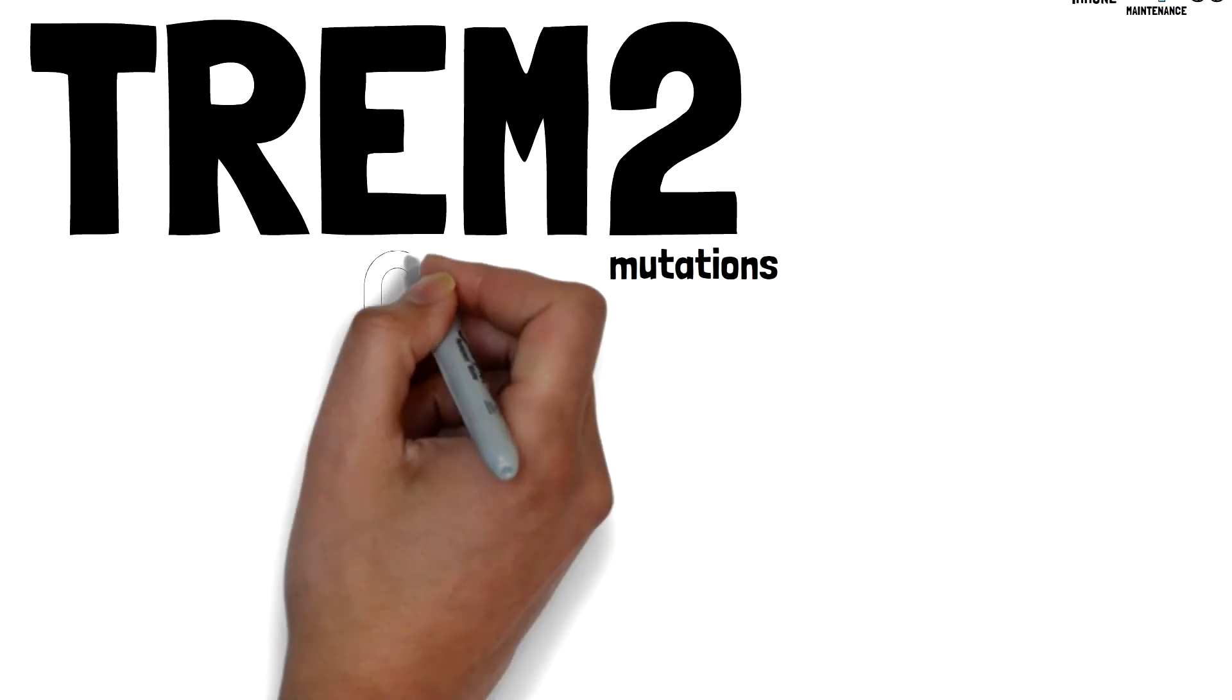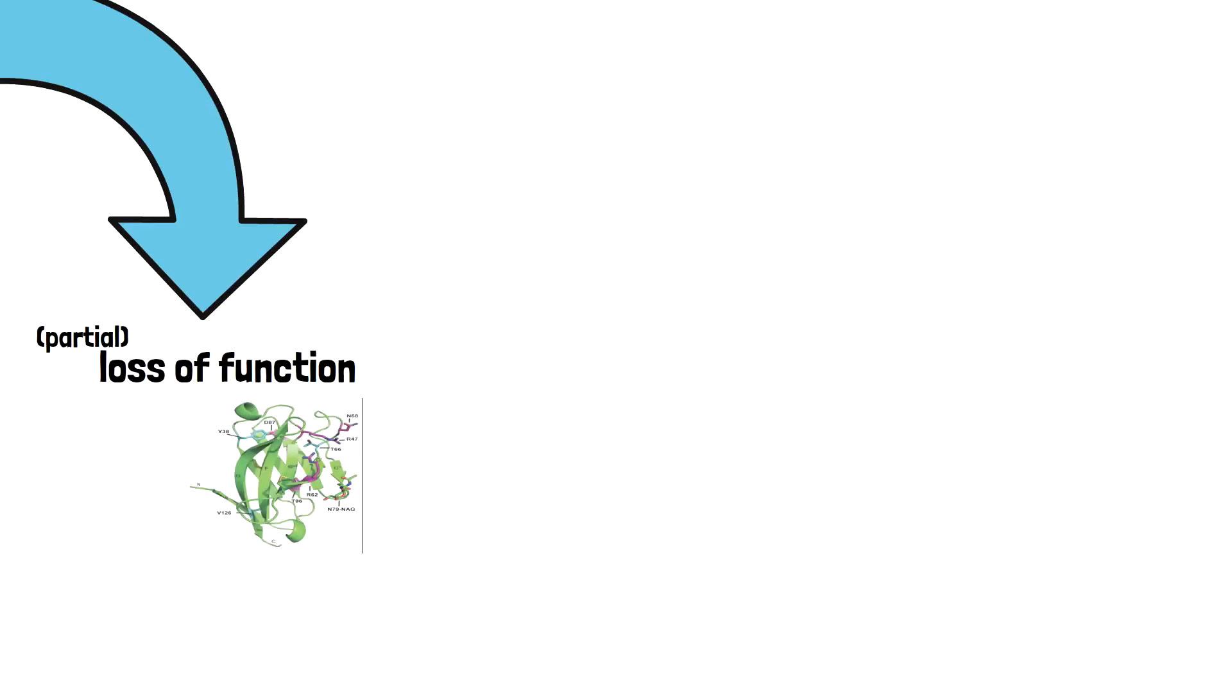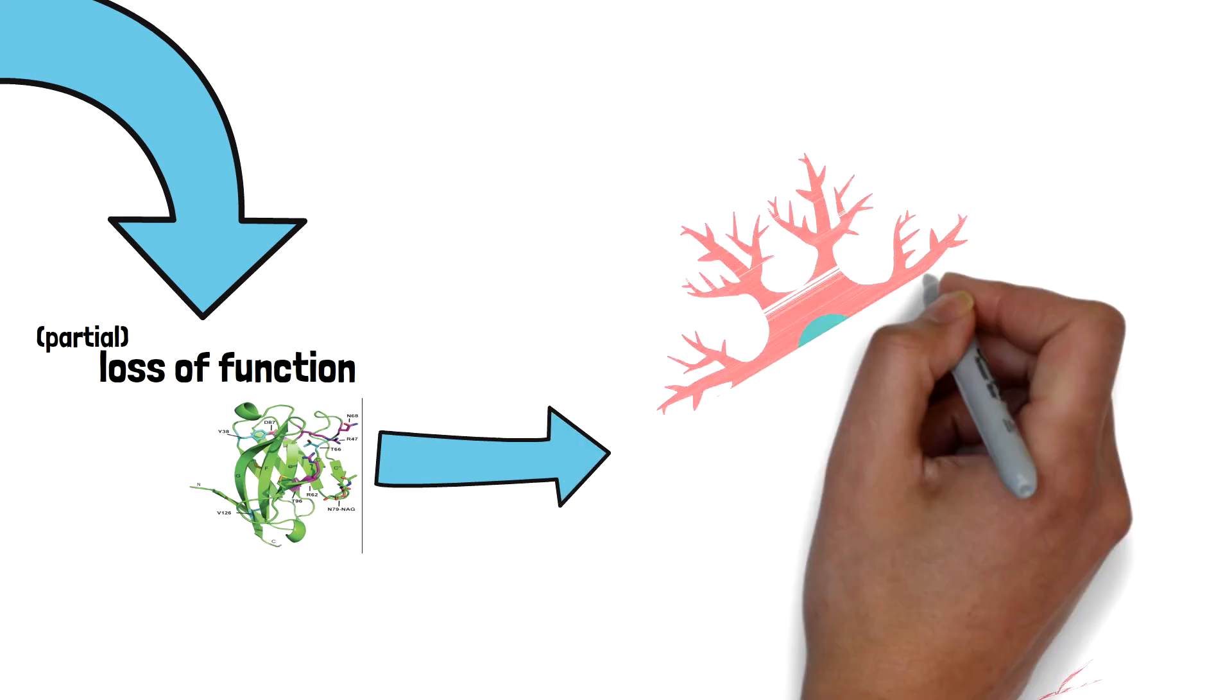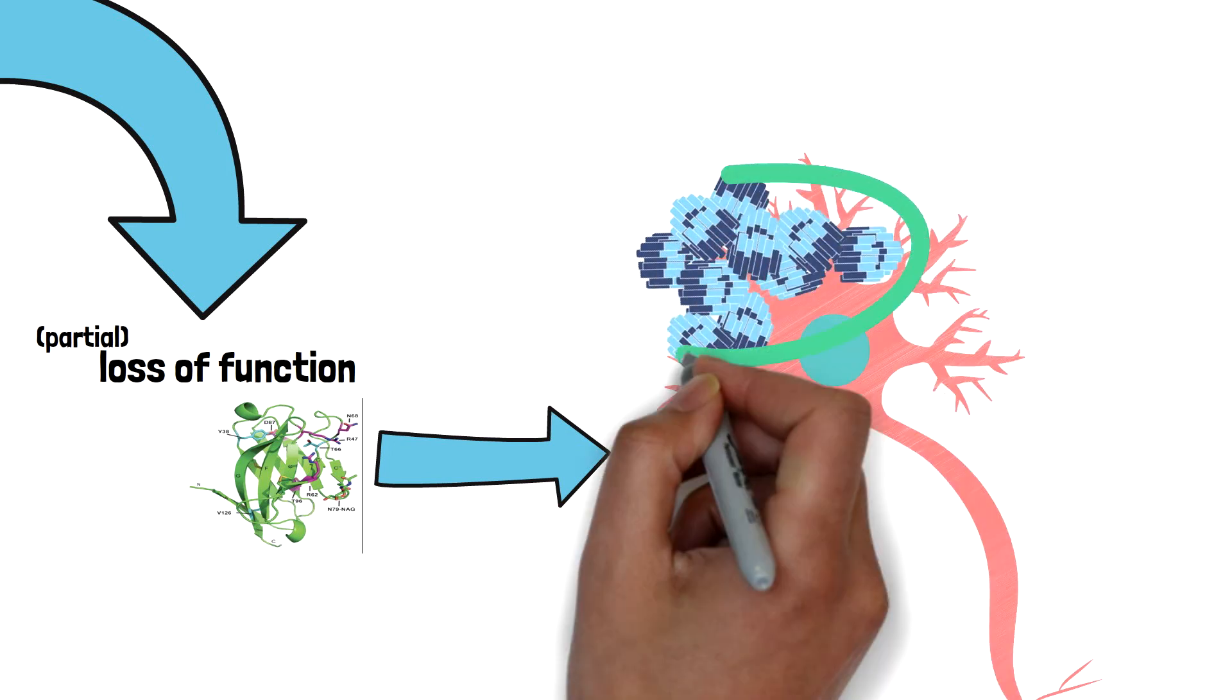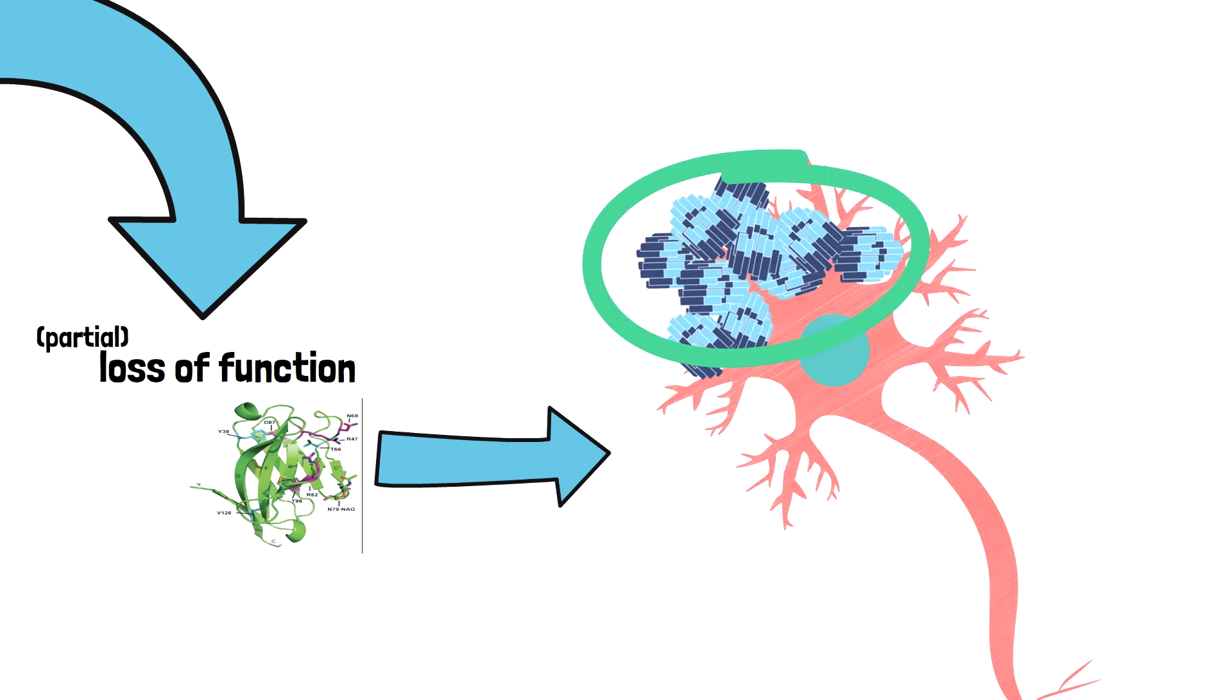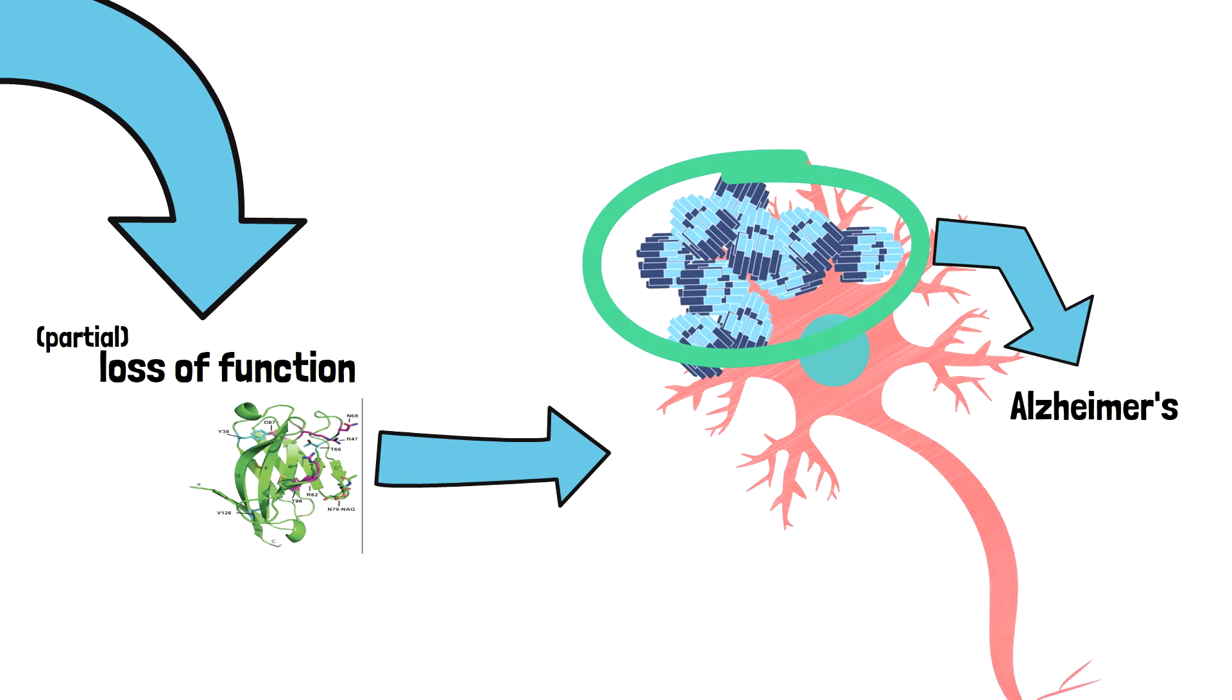TREM2 mutations are linked to Alzheimer's disease since they induce the partial loss of function in the TREM2 protein and consequently alter the behavior of how microglial cells interact with the amyloid plaques in the brain. The buildup of these amyloid plaques results in Alzheimer's disease.